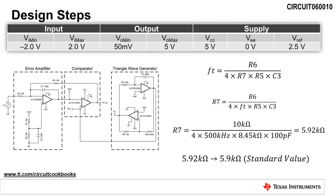Next, we will set the oscillation frequency to 500 kilohertz. The oscillation frequency, F sub T, is equal to R6 divided by 4 times R7 times R5 times C3. We will select C3 as 100 picofarads, which allows us to calculate R7 as 5.92 kilo ohms. We will use the next closest standard resistor value of 5.9 kilo ohms for this design.